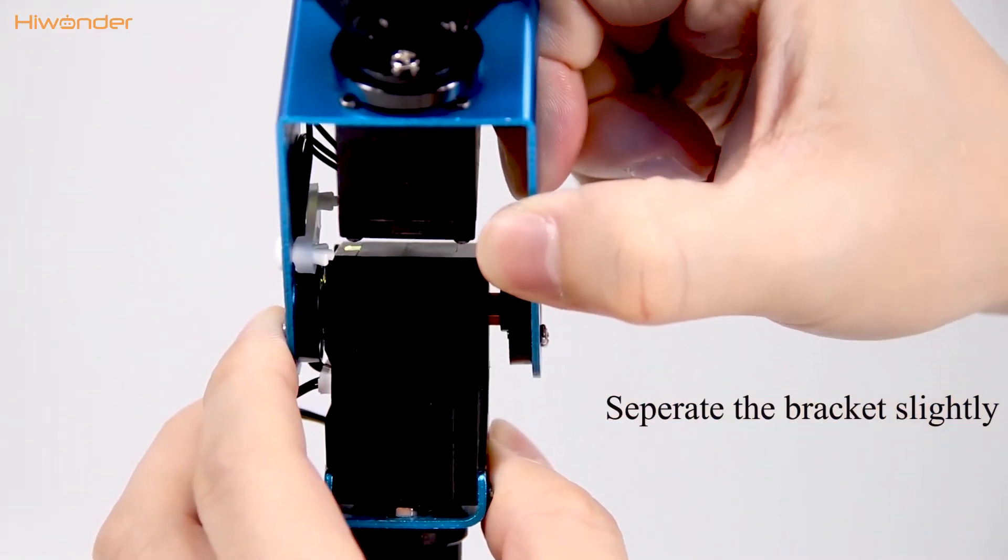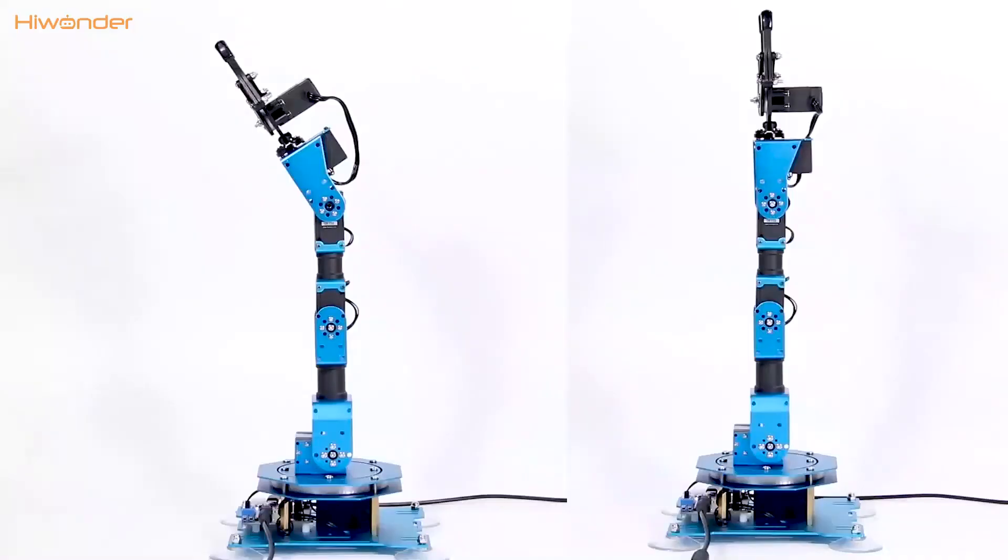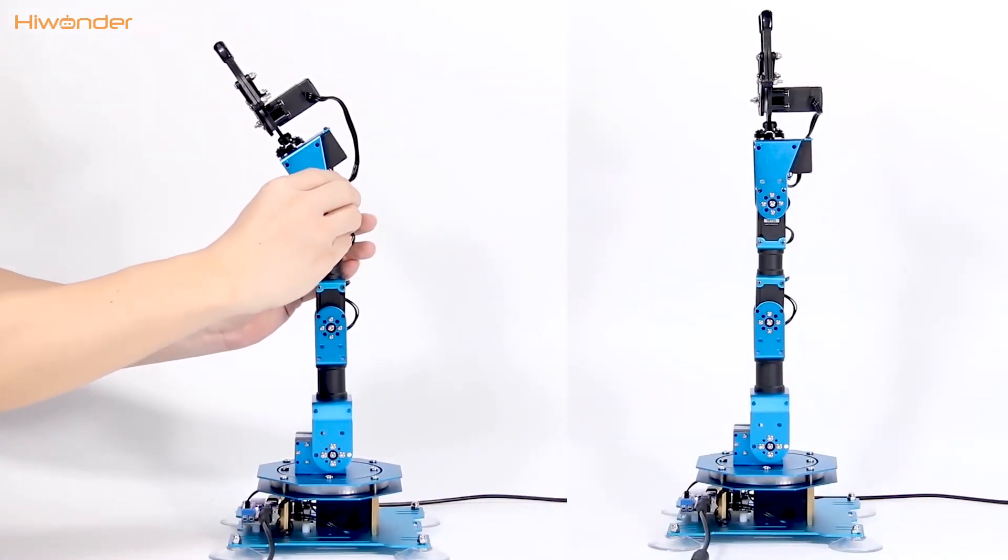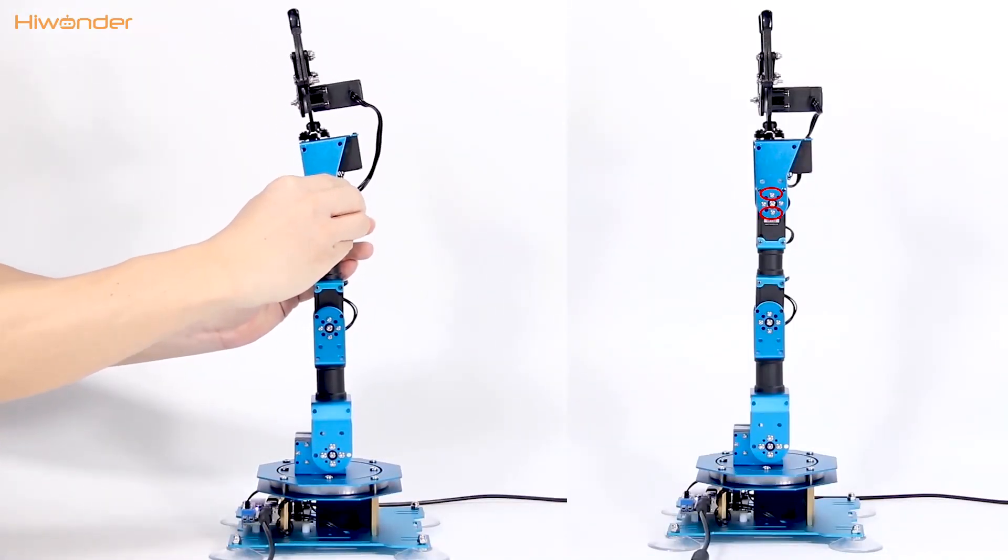Slightly open the servo bracket to separate from the bracket. According to the right side, remove the position of servo 3.